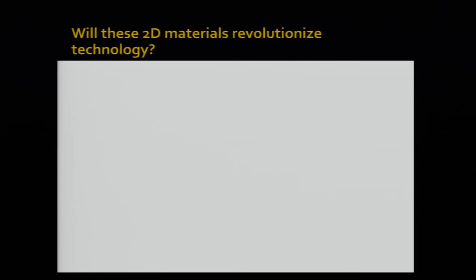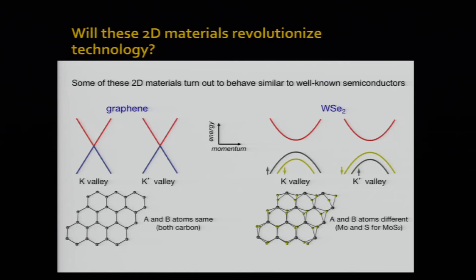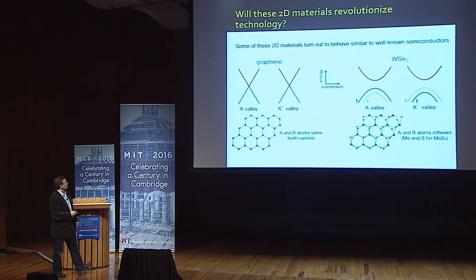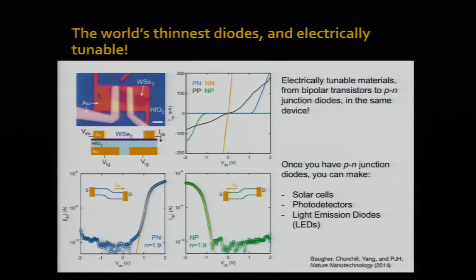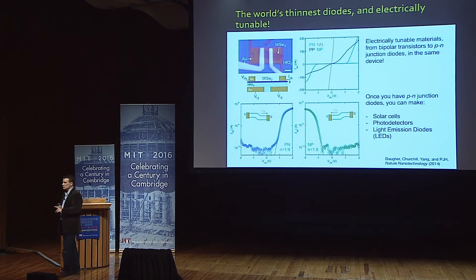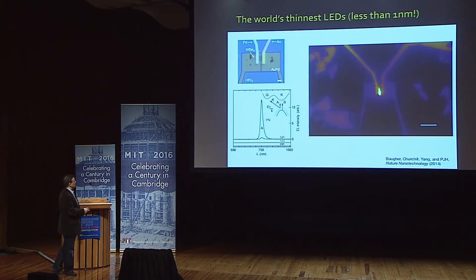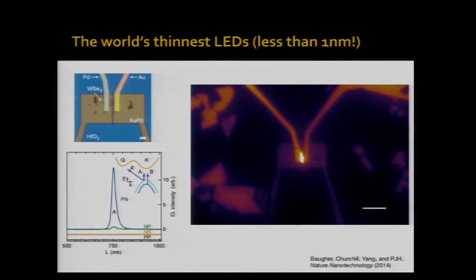We don't know yet. Graphene doesn't have a band gap, but some of these other materials — like tungsten selenide — do, and engineers know what to do with them. In my group, in collaboration with engineers, we've made the thinnest diodes in the world. A diode is one of the simplest electronic devices — you put two gates and make a p-n junction or n-p junction. And once you have a diode, you can make solar cells, photodetectors, and LEDs. Here you have a picture of the world's thinnest LED — less than one nanometer in thickness — and it's shining right at you.